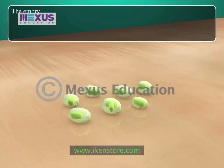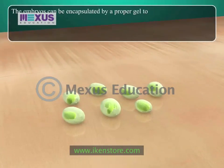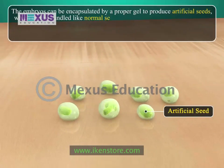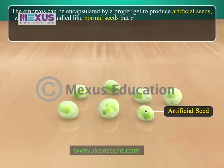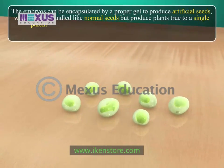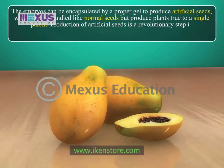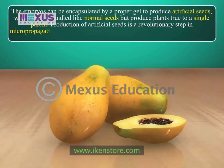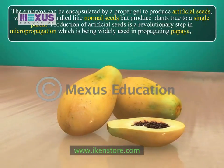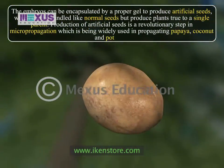The embryos can be encapsulated by a proper gel to produce artificial seeds, which can be handled like normal seeds but produce plants true to a single parent. 4. Production of artificial seeds is a revolutionary step in micropropagation, which is being widely used in propagating papaya, coconut, and potato.